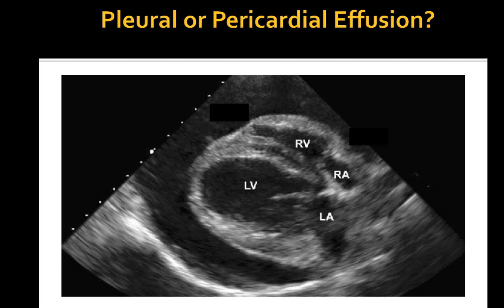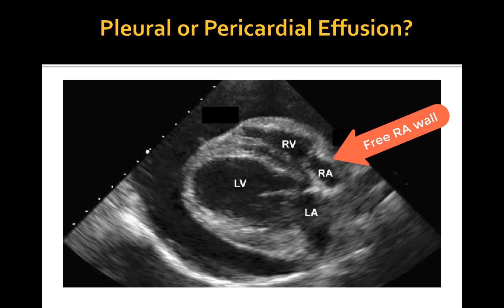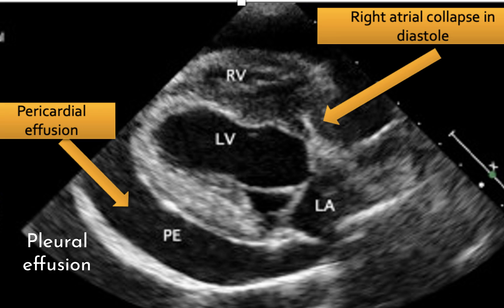This is a right parasternal long axis view of the heart. There is a moderate to large amount of pericardial effusion surrounded by a hyperechoic bright structure representing the pericardial sac. The free right atrial wall is partially collapsed, suggestive of true cardiac tamponade. In a very similar image, you may appreciate a complete collapse of the atrial wall and partial collapse of the free right ventricular wall, consistent with severe cardiac tamponade.